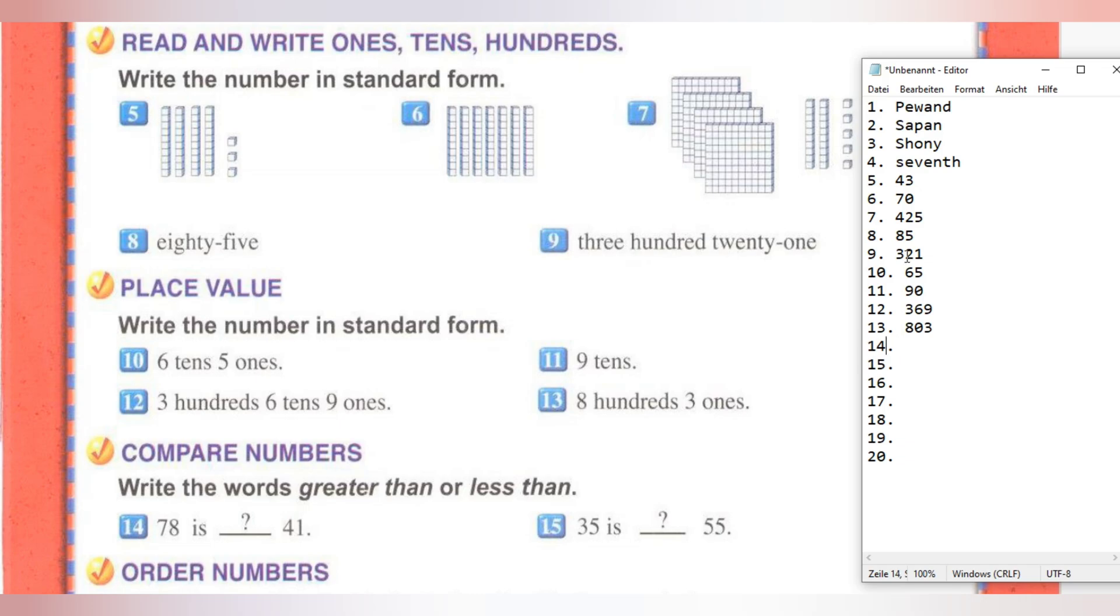Task 13 is 803 ones: 803. Next question: Write the words greater than or less than. 78 is greater than 41, and 35 is less than 55.